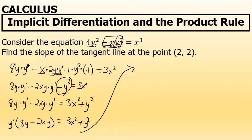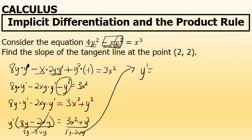The last step in finding the derivative of y with respect to x is to divide both sides by (8y minus 2xy). Dividing both sides gives y prime — the derivative of y with respect to x — equals (3x² plus y²) all over (8y minus 2xy).